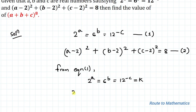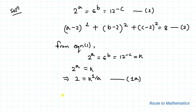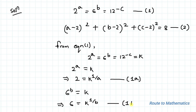From 2 to the power a equals k, we get 2 equals k to the power 1 by a — let's call this equation 1a. Similarly, from 6 to the power b equals k, taking the b-th root of both sides, we get 6 equals k to the power 1 by b — let's call this equation 1b.